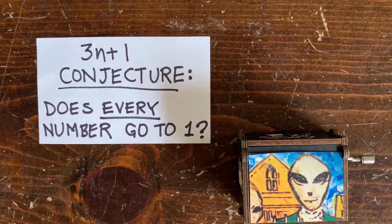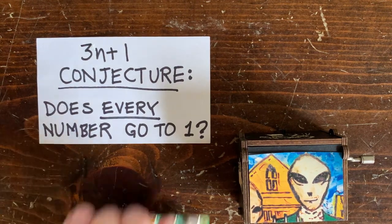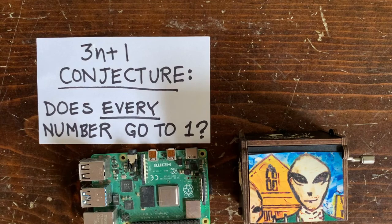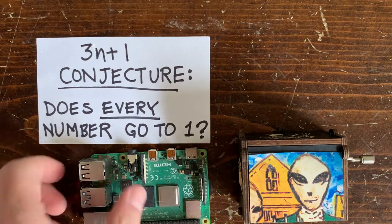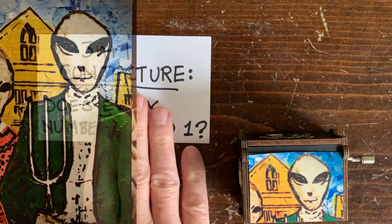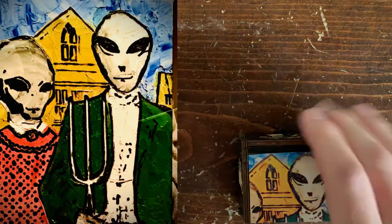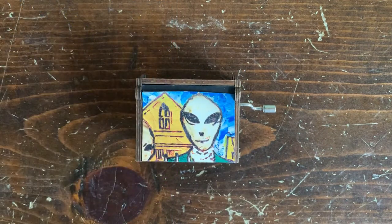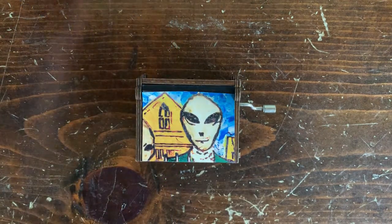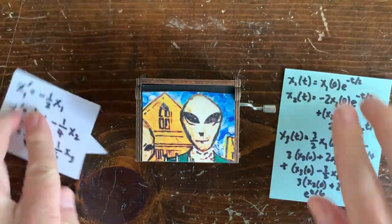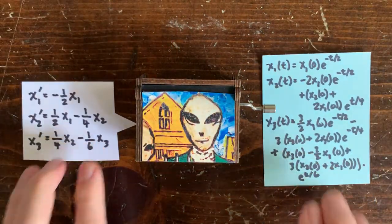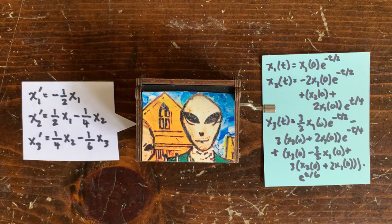In this episode, we're going to treat the 3n plus 1 mechanism like a computer and try to program it. Suppose aliens give you one of their alien computers. They demonstrate some amazing things the computer can do, like solve differential equations and design new medicines.